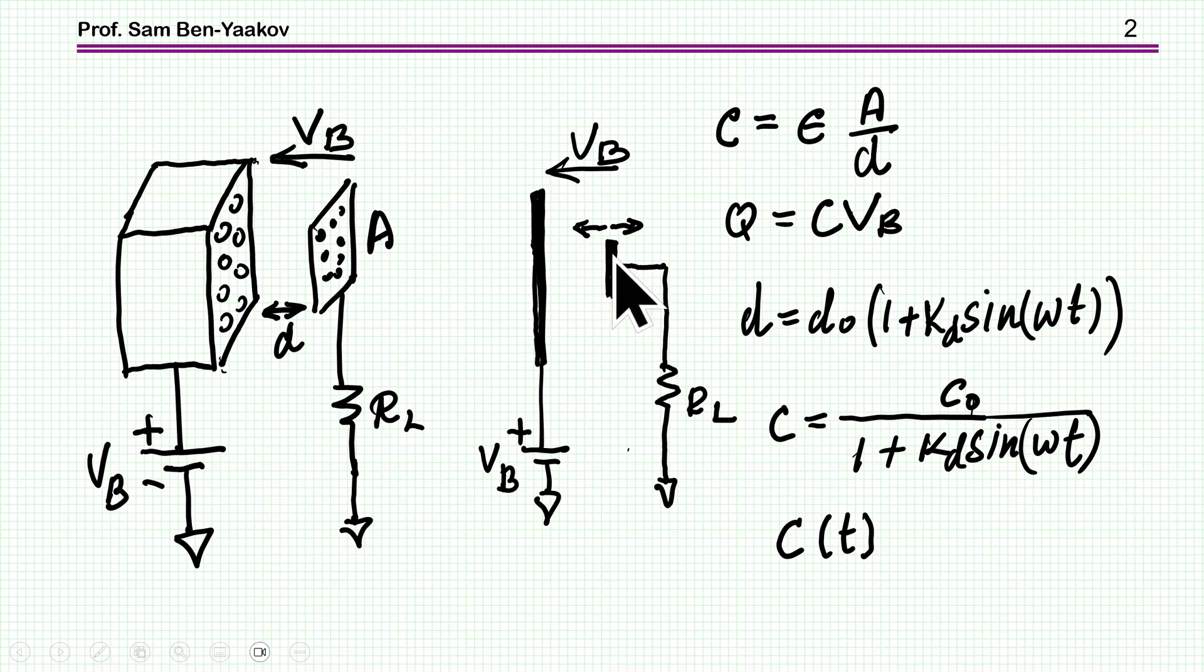Now if I move this electrode back and forth, let's assume it's a sinusoidal movement. I can express it as some distance with some perturbation. Here k is a small number and here is the movement as sin(ωt). So the capacitance at any given time can be expressed as the nominal value divided by this expression, 1 + k·sin(ωt), making it a time-dependent capacitor. So this is the system we are talking about.